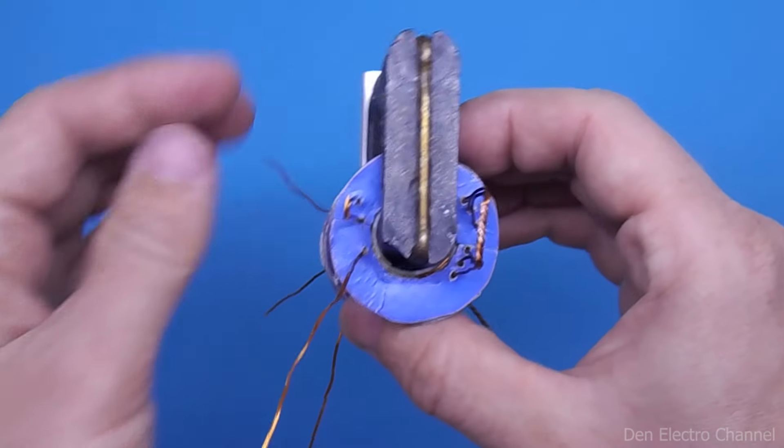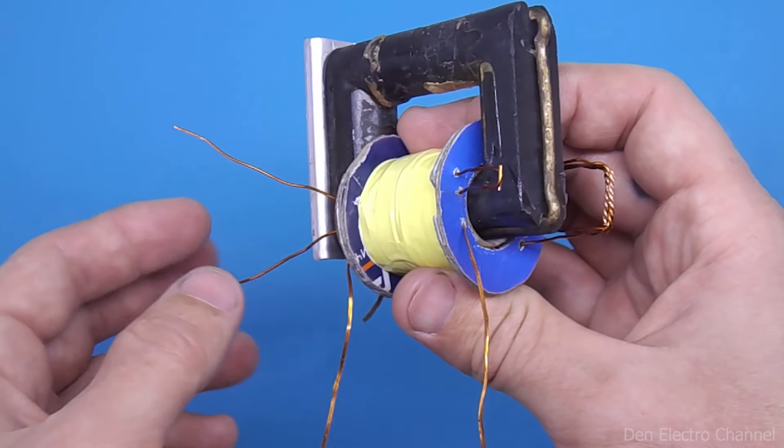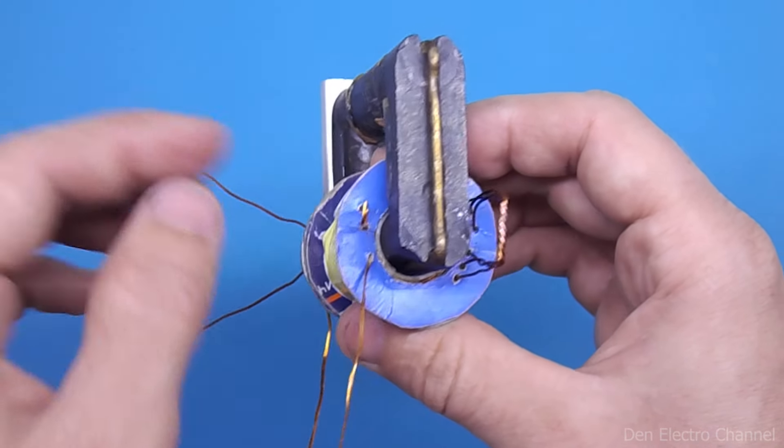If you look at the transformer from above, the high voltage side will be on the left. These are the ends of both halves of the primary winding, and this is their connection.